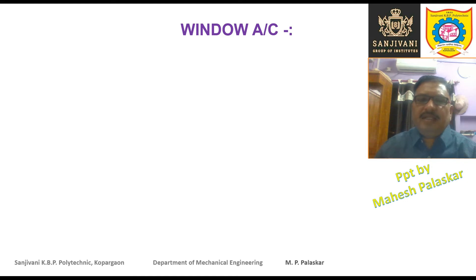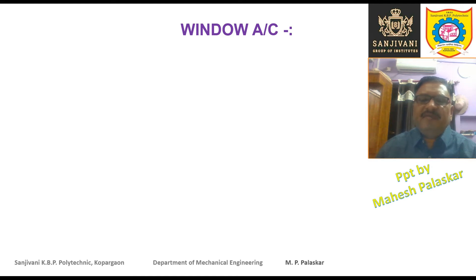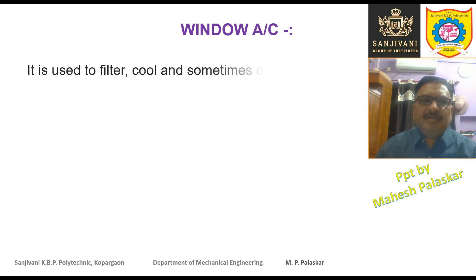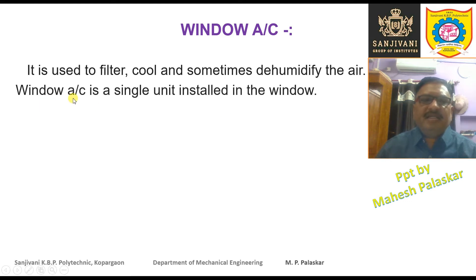What is a Window Air Conditioner? The name indicates that this Window Air Conditioner is kept in the window, but actually it is kept in the wall. It is used as a Room Air Conditioner, so it is a type of Unitary Air Conditioner. It is used for cooling the air, filtering the air, and sometimes even for dehumidifying the air.